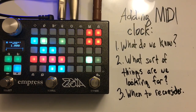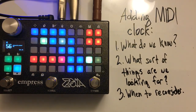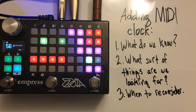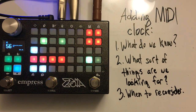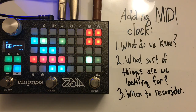That was Johan Looper version 2, which I'm going to be releasing along with this video. My original plan was to use it as a prop while I talked about this subject, which is adding MIDI clock to a patch that doesn't have it.